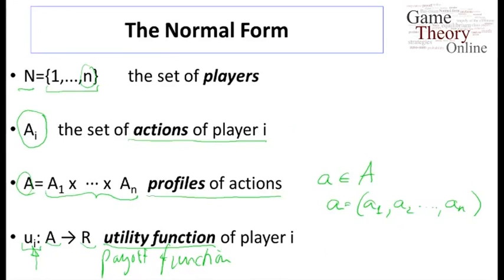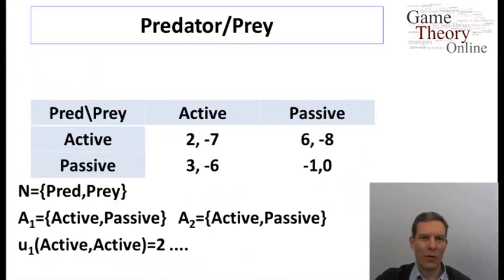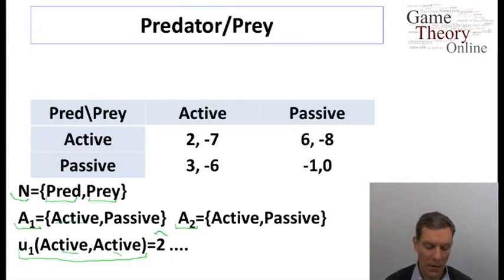So just in terms of examples, if we go back to our predator-prey relationship, we represented that as here N was the set of two players, the predator and the prey. They each had action spaces, in this case that were identical, they could either be active or passive, so they each had two actions available. And then we represented these in terms of payoffs by a number which represented how well they each did as a function of this pair of actions that were played. So if they both were active, then the predator got a payoff of two. So here the predator is listed as the row player.